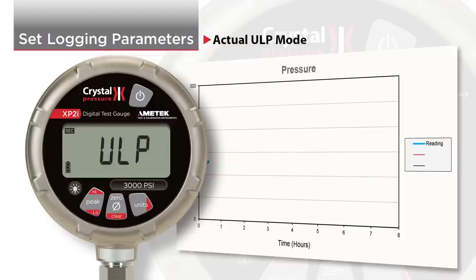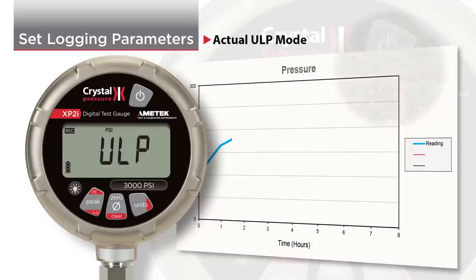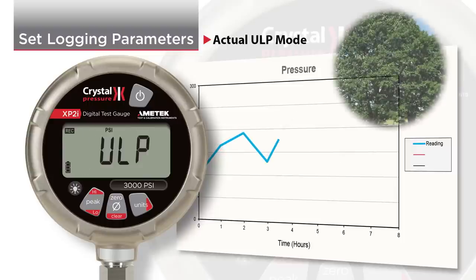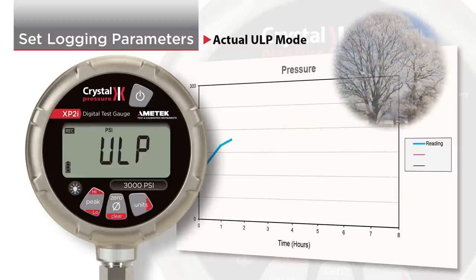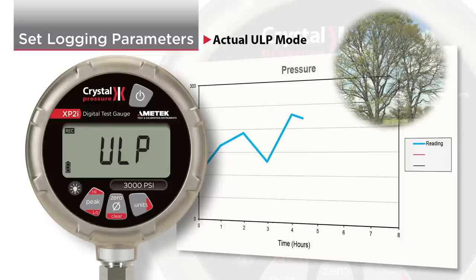Actual ULP stands for actual ultra-low power mode. Actual ULP records the actual pressure being measured at every logging interval, just like actual mode. But in addition, ultra-low power mode maximizes the battery life of your XP2i, allowing you to record continuously for up to one year on one set of batteries.